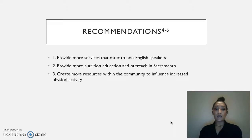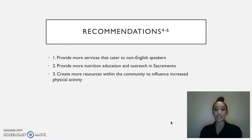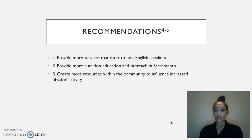From my key informant interviews and research, three recommendations were established to help reduce the rate of obesity in Sacramento. The goal is to promote healthy nutrition and weight loss as conveniently as possible for low-income individuals. The first recommendation is to provide more services that cater to non-English speakers to reach more people in need. There is currently a communication barrier between some obese individuals and community professionals due to language differences, and Sacramento is a diverse city where many of those struggling with obesity are foreign born.